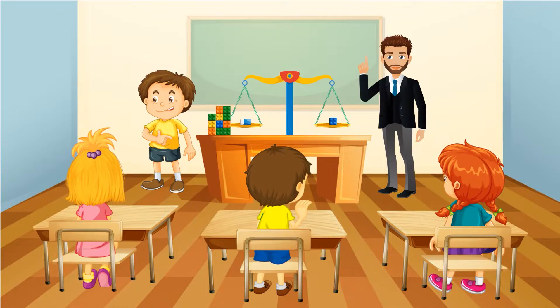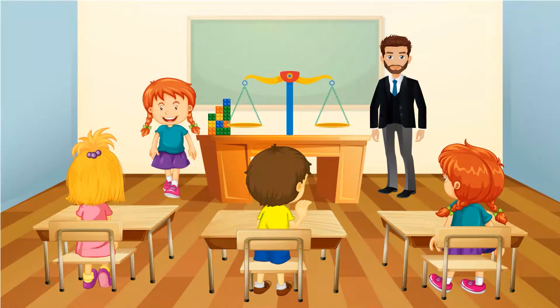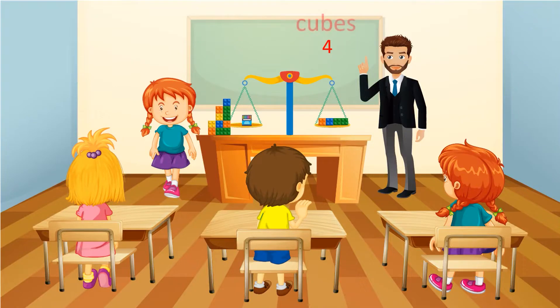The last student followed and placed the crayon box, then started to stack the cubes. One, two, three, four. The scale is balanced at four cubes. This means that the mass of the crayon box is four cubes.